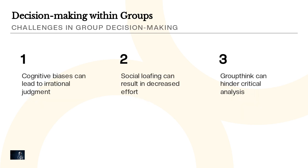In group decision-making, there are several challenges that can impact the process. Cognitive biases can lead to irrational judgment, social loafing can result in decreased effort, and groupthink can hinder critical analysis. It's important to be aware of these challenges and implement strategies to mitigate their impact on the decision-making process.